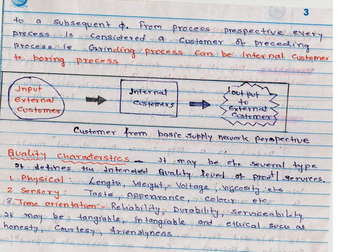From a process perspective, every process is considered the customer of the preceding process. For example, the grinding process can be the internal customer to the boring process. So within this supply network, we get needs and wants from external customers, deliver through internal customers, and finally output to the external customers.